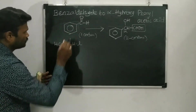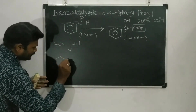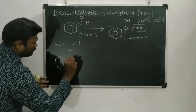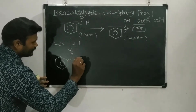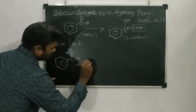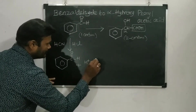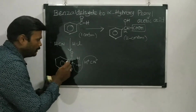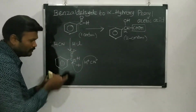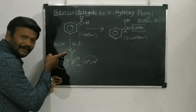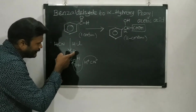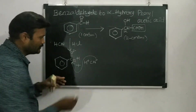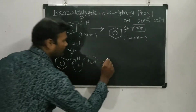If I react benzaldehyde with HCN or NaCN in the presence of HCl, what kind of product will I get? In benzaldehyde there is C double bond O and H. Adding HCN gives H⁺ and CN⁻. The CN⁻ will attack the carbonyl carbon because that carbon has a slight positive charge — the highly electronegative oxygen pulls electron density away, making the carbon electrophilic.